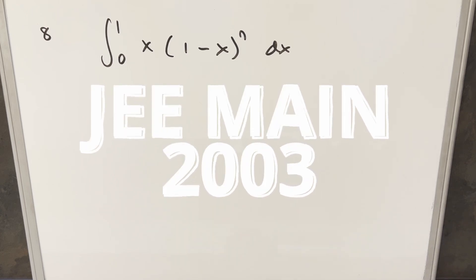We obtain another integral. This one's from JE Main 2003. We have the integral from zero to one of x times one minus x to the n dx.